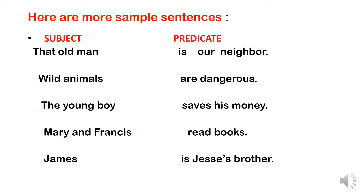Here are more simple sentences. In the first sentence, 'that old man is our neighbor' — that old man is our subject, and is our neighbor is the predicate. Second sentence, 'wild animals are dangerous' — wild animals is our subject, and are dangerous is the predicate. Third, 'the young boy saves his money' — the young boy is our subject, and saves his money is our predicate. Fourth, 'Mary and Frances read books' — Mary and Frances is our subject, and read books is our predicate.